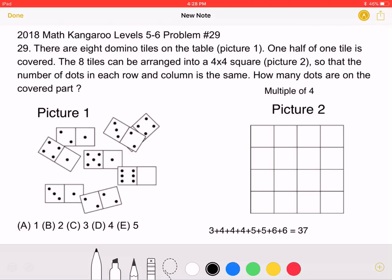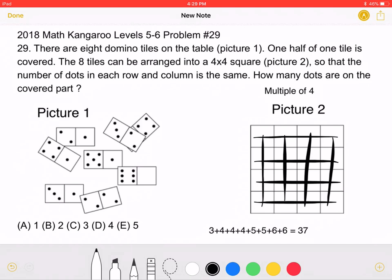Since the problem states that when the 8 tiles are placed into the square, the sum of the dots in each column and the sum of the dots in each row are the same, the total sum of the dots must be a multiple of 4.